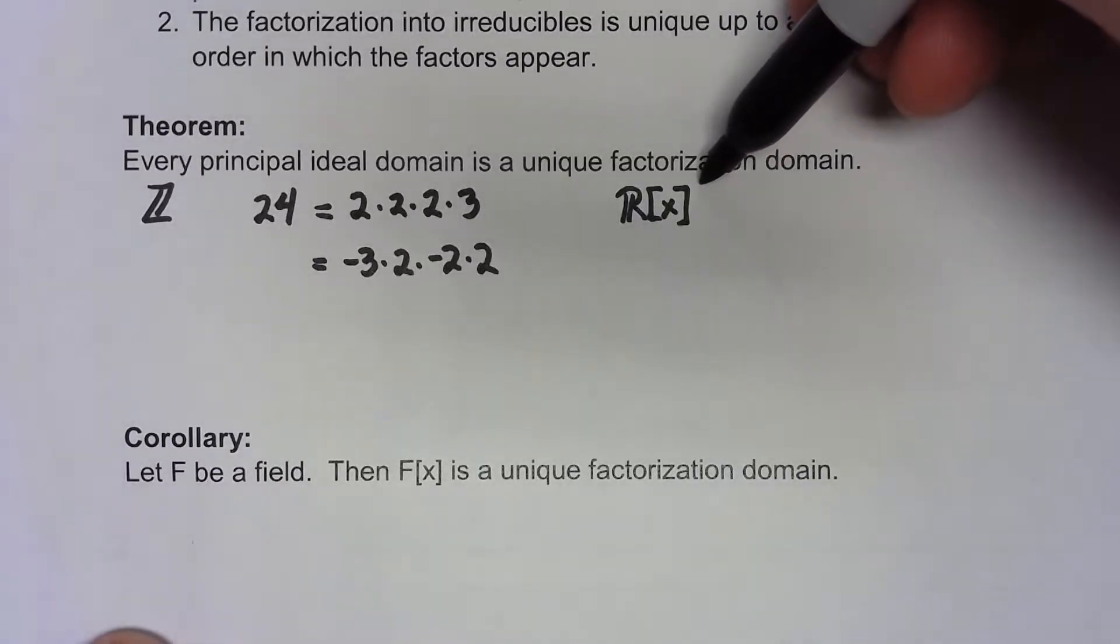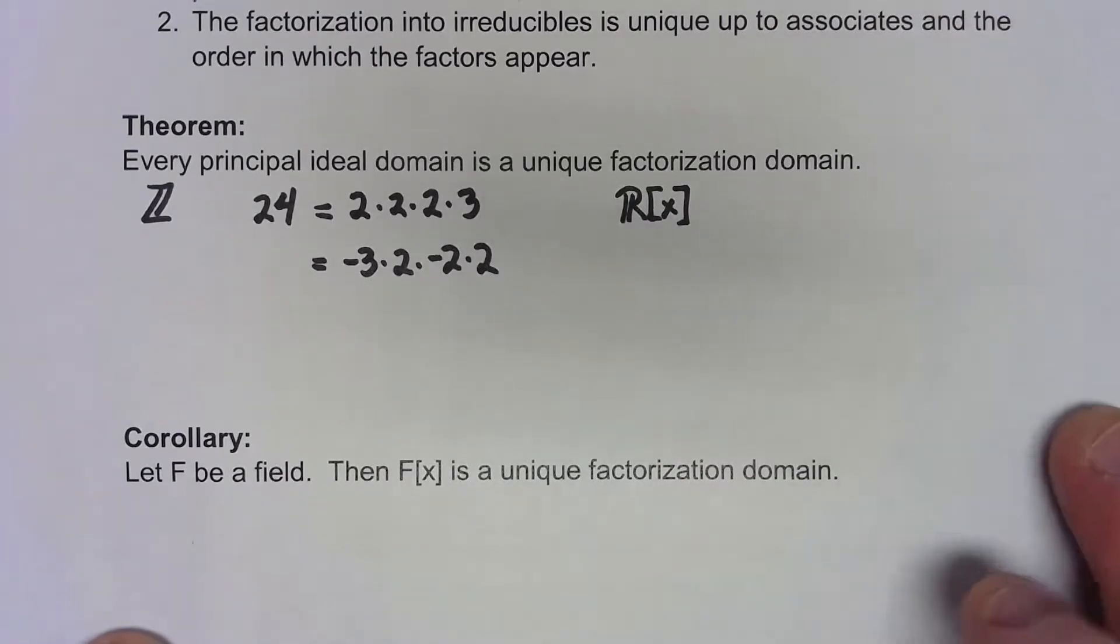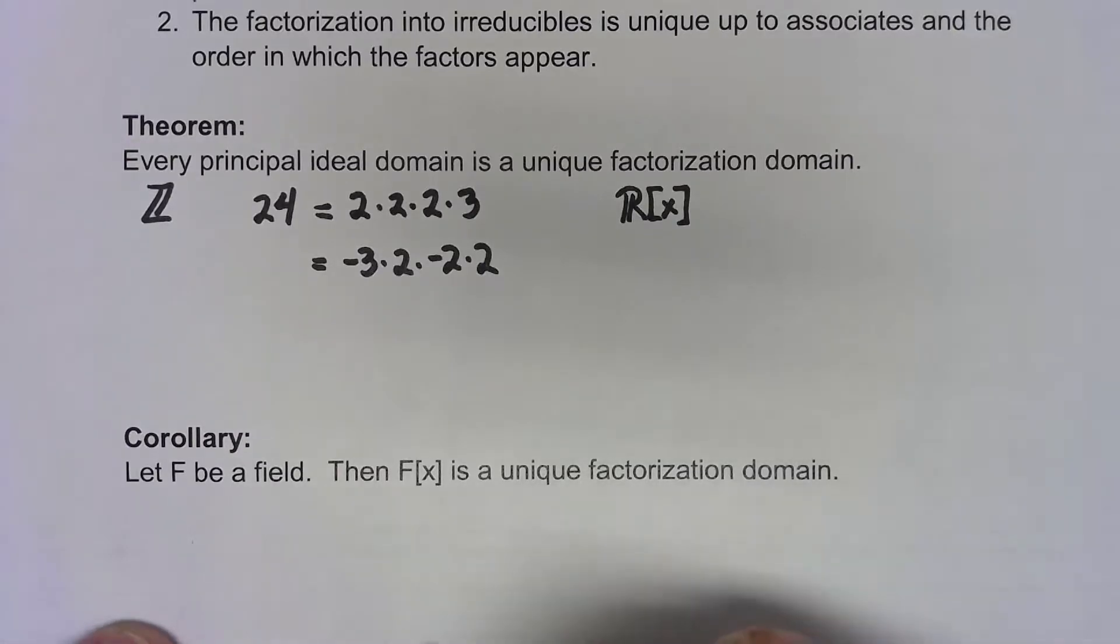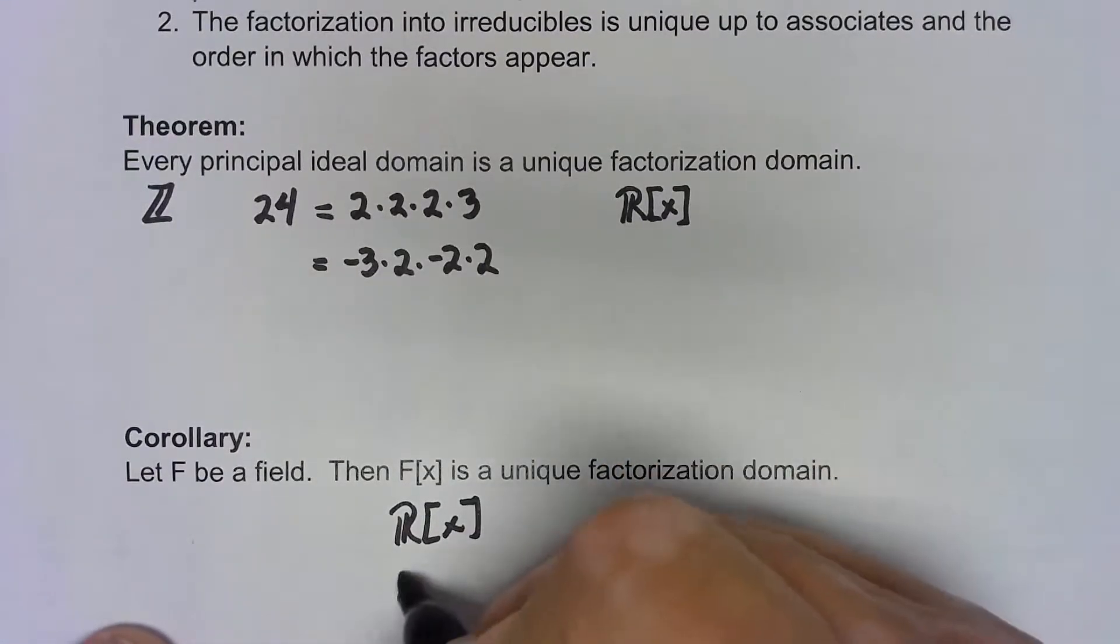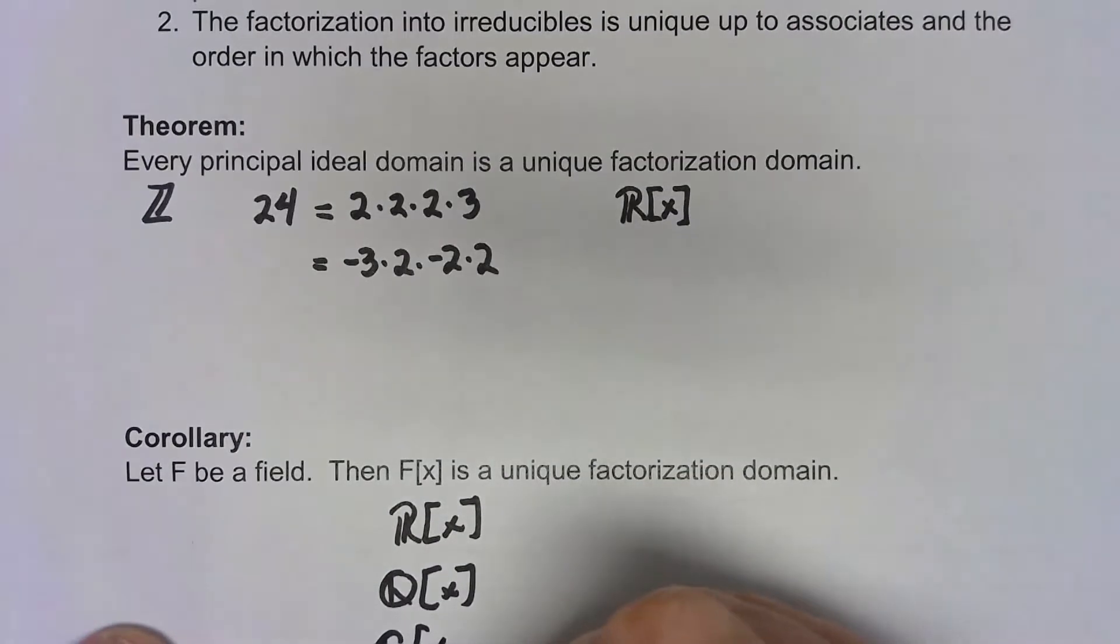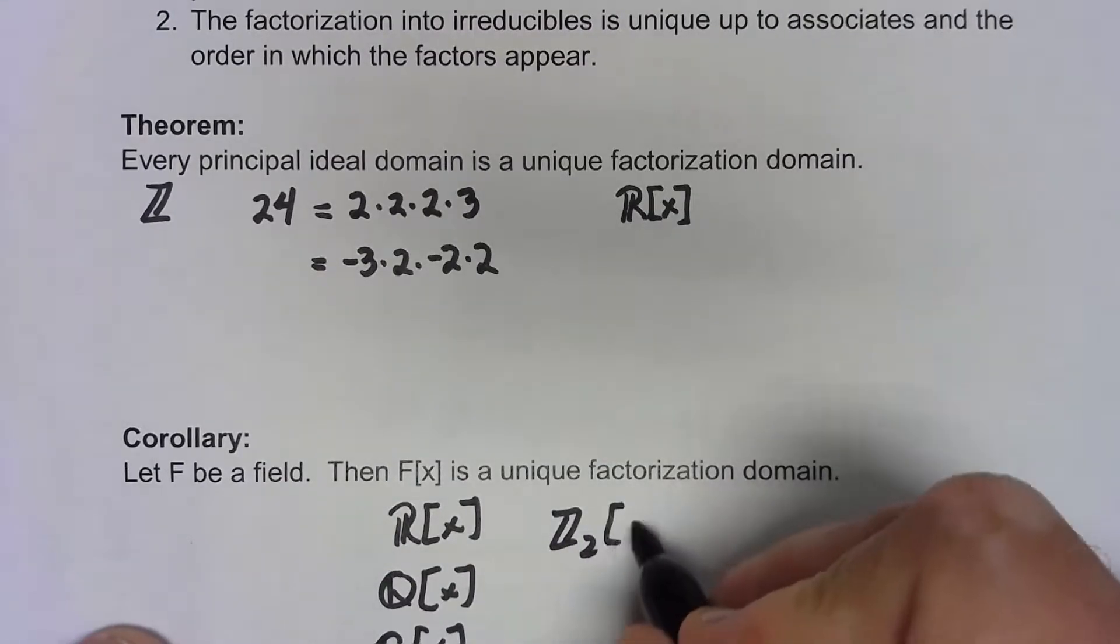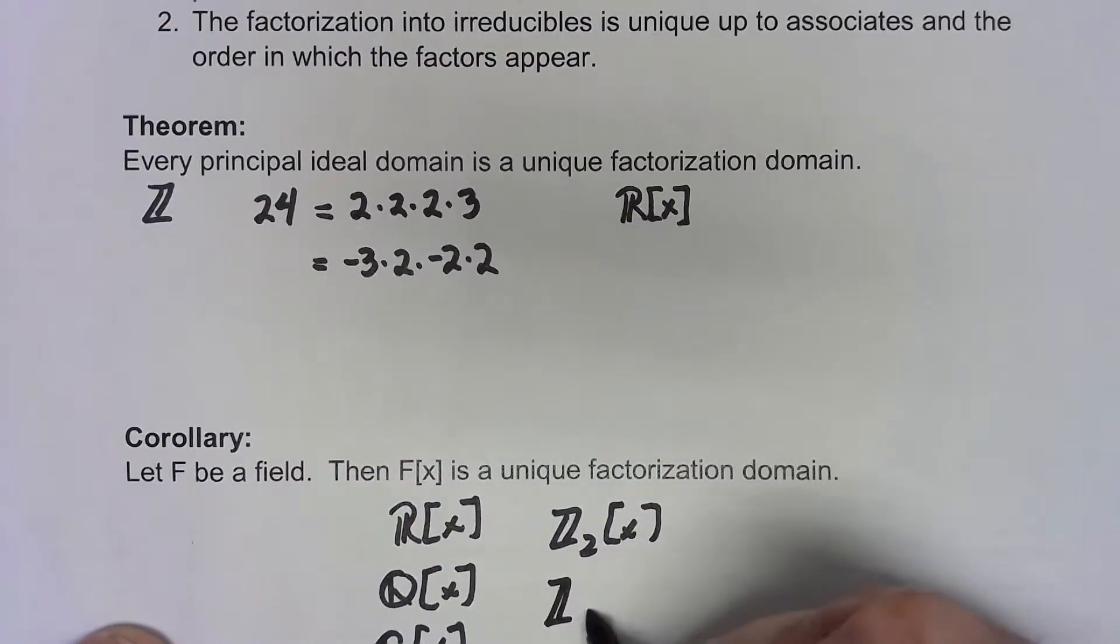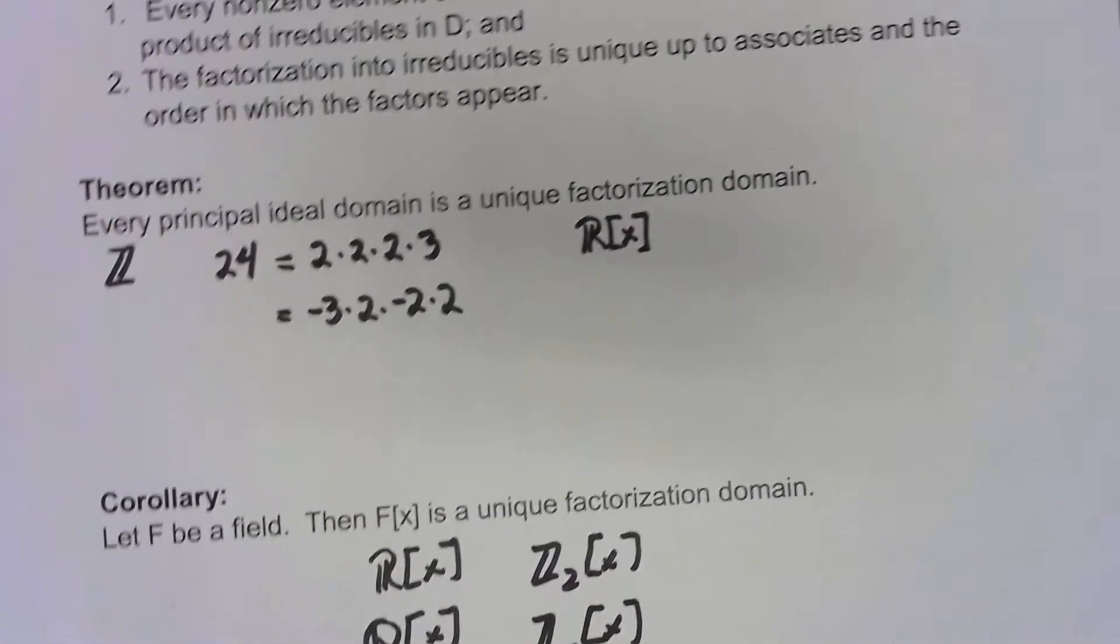That gives us R[x], it gives us Q[x], it gives us C[x], all those things have to be unique factorization domains. And even things like Z_2[x], Z_5[x], all these things have to be unique factorization domains.